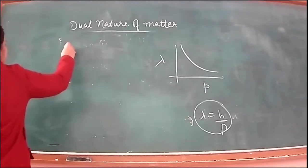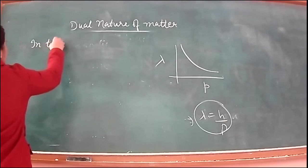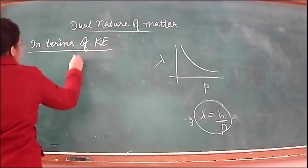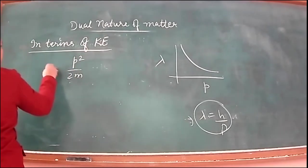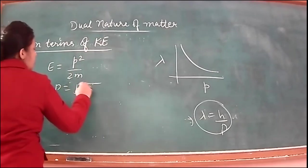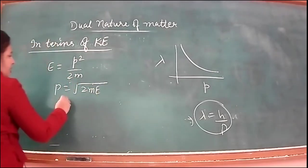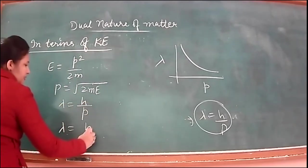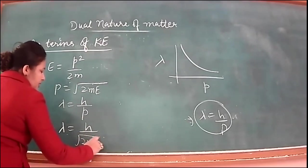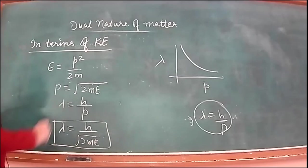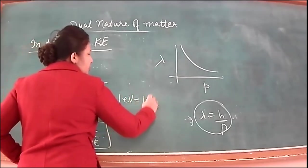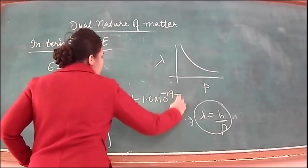We will express de Broglie wavelength in terms of different parameters. In terms of kinetic energy: since p² / 2m = E (kinetic energy), we get p = √(2mE). Substituting into the de Broglie formula gives λ = h / √(2mE). If kinetic energy is given in electron volts, convert to joules before using this formula.